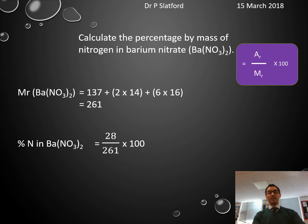The percentage of nitrogen is 28 out of 261—it's not 14, don't fall into that trap. Because of the brackets, there are two nitrogens here, so it's 2 times 14 equals 28. That comes out as 10.7%.